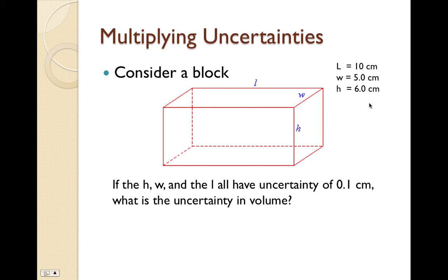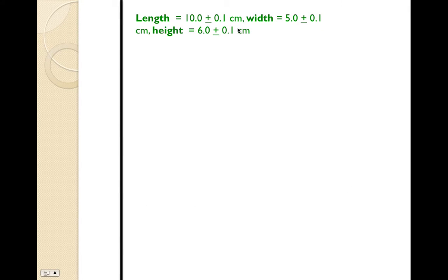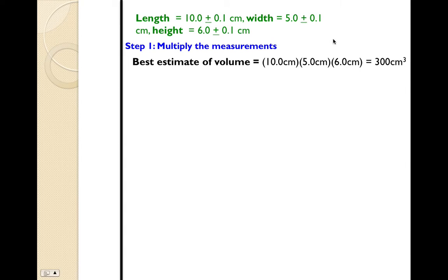Here's an example — a block with length, width, and height measurements in centimeters. If I were to ask you to find the volume, knowing that the uncertainty of all measurements is 0.1 centimeters: the first step is to multiply the measurements, because volume equals length times width times height. So 10 times 5 times 6 is 300 centimeters cubed.